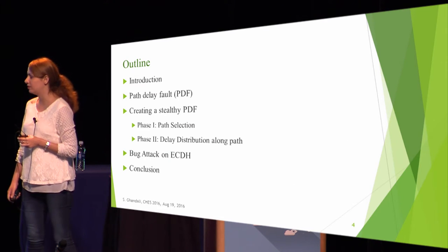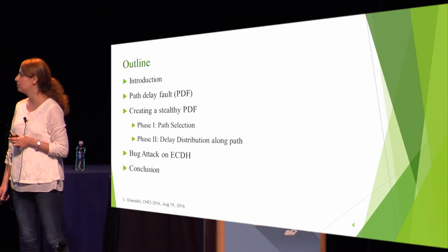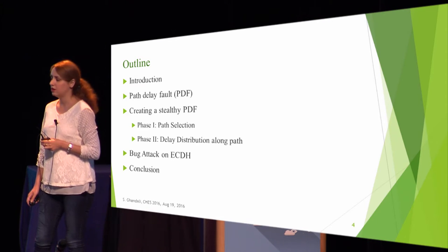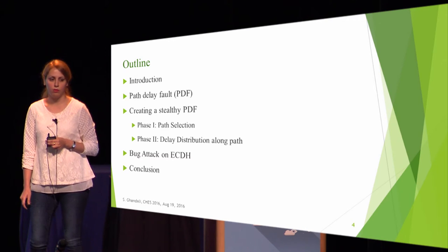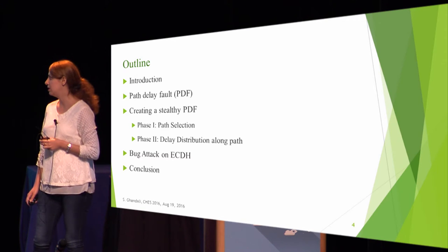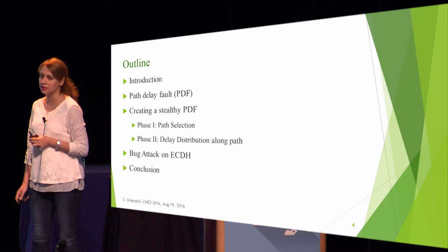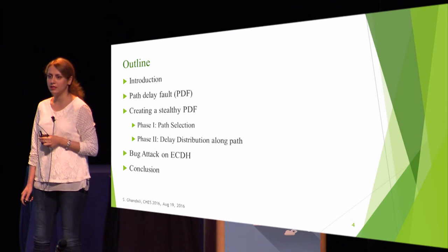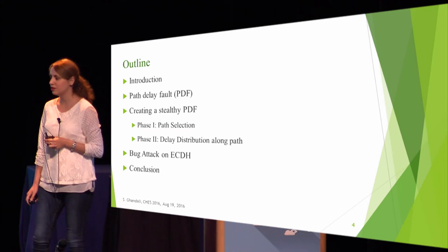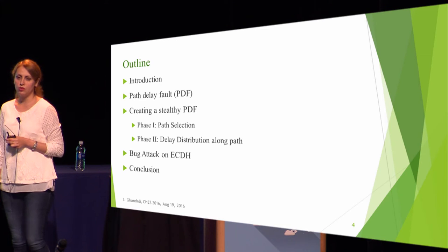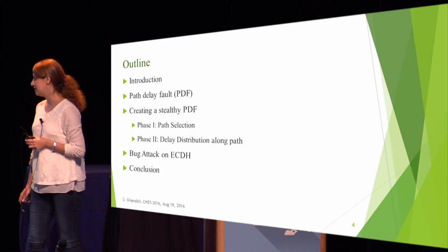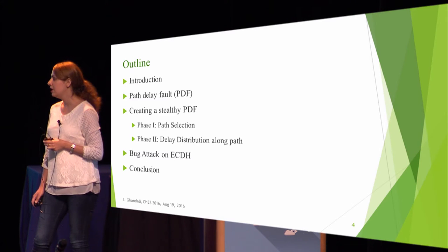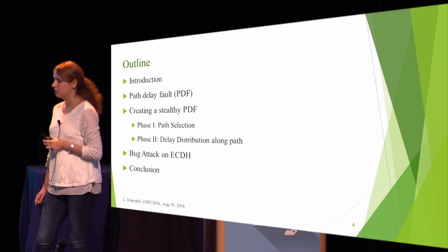In this talk, first I introduce the work, then I'll talk about the path delay fault. Then I'll introduce our proposed method for creating an STLC path delay fault, which consists of two main phases: path selection and delay distribution along the selected path. Then I'll talk about the bug attack on the ECDH protocol. At the end, I conclude the work.